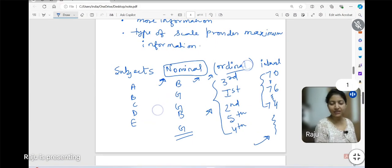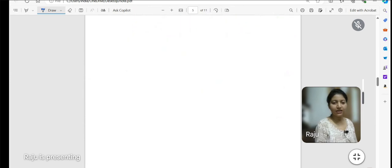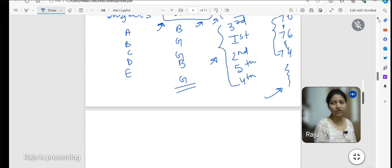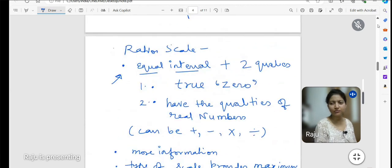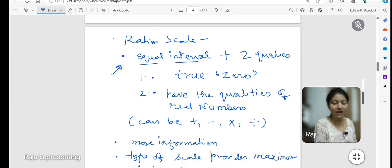So, you can see that we have to know about another scale which is our most important, most informative scale and that is ratio scale.